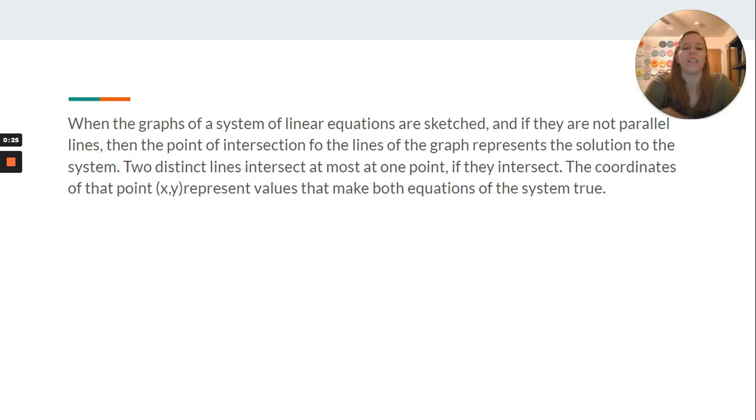Two distinct lines intersect at most at one point, if they intersect. The coordinates of that point, x, y, represent values that make both equations of the system true.